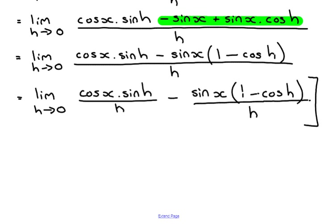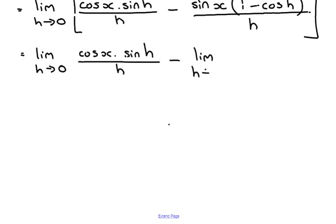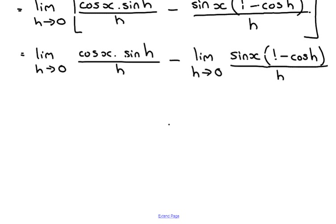We're finding the limit of all of that. One of our laws of limits says that the limit of a sum or difference is the limit of each term separately, so we split the limit into: the limit as h tends towards zero of cos x sine h over h, minus the limit as h tends towards zero of sine x times one minus cos h over h.